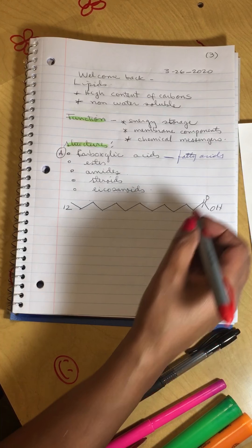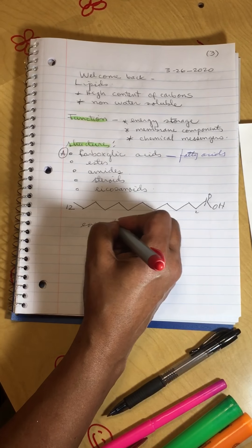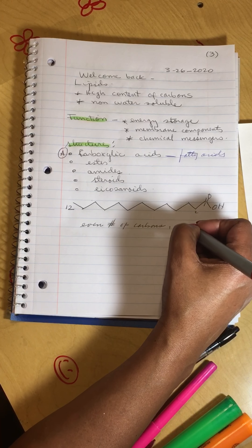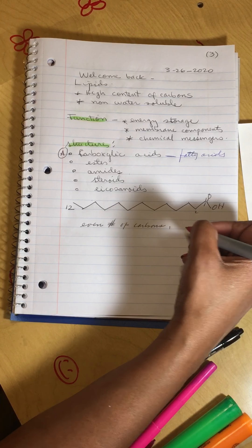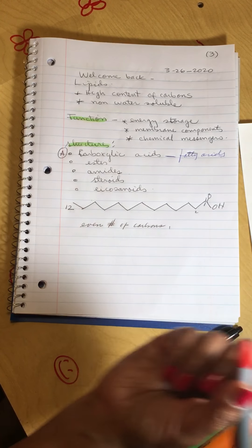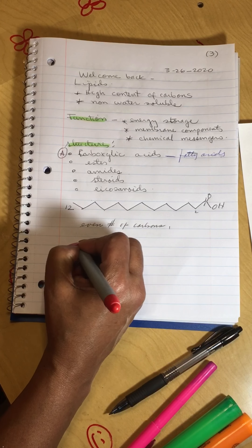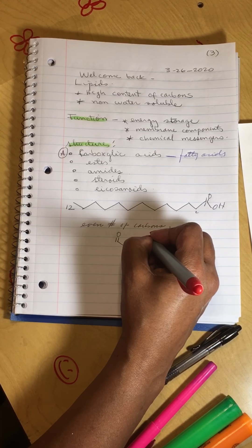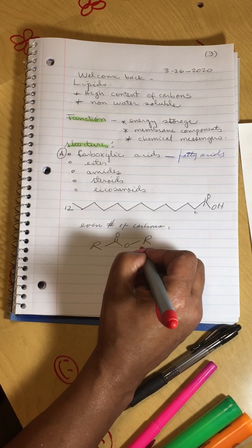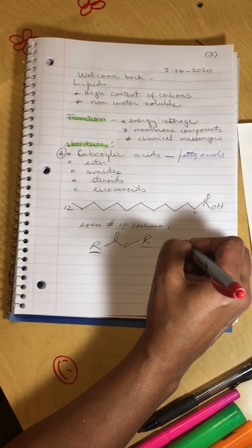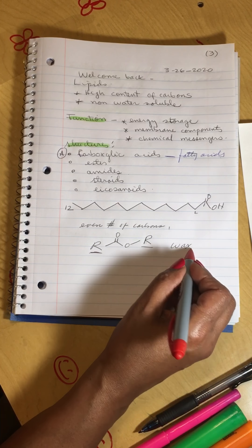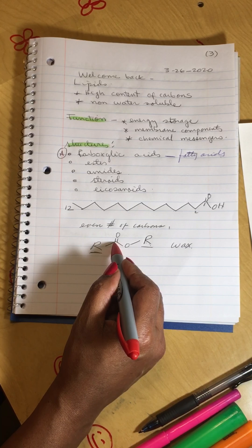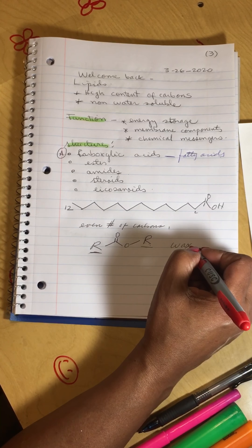Fatty acids will have an even number of carbons — 12, 16, 18, 20, 22, 24 — so that is the simplest lipid we can have: just a free carboxylic acid. The second type is called an ester. If it is formed with a very long hydrocarbon chain, it will be called a wax — the product of a long-chain alcohol reacting with a fatty acid with a very long hydrocarbon chain.